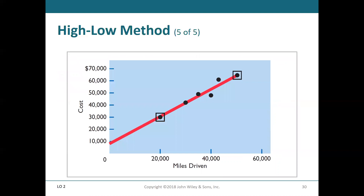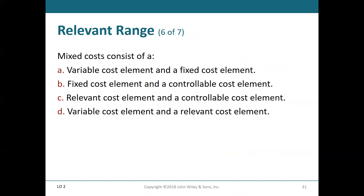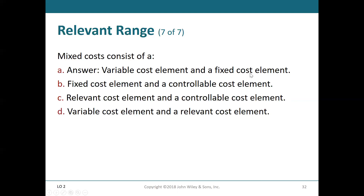Here's a graph showing examples for the relevant range between 20,000 and 50,000 miles, with a straight line cost driver drawn between the two data points. Mixed costs consist of: A — a variable cost element and a fixed cost element; B — a fixed cost element and a controllable cost element; C — a relevant cost element and a controllable cost element; or D — a variable cost element and a relevant cost element. Some of these terms haven't been discussed, but what we talked about was a variable cost element and a fixed cost element — that's what goes into mixed costs. The answer is A.